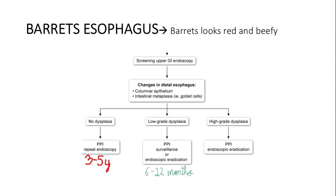Barrett's esophagus looks red and beefy due to intestinal metaplasia with goblet cells replacing the normal squamous epithelium, diagnosed on screening upper GI endoscopy especially in patients with chronic GERD. Once Barrett's is identified, management depends on the grade of dysplasia. No dysplasia: PPI and repeat endoscopy every 3 to 5 years. Low-grade dysplasia: PPI and either surveillance or endoscopic eradication, monitoring every 6 to 12 months.